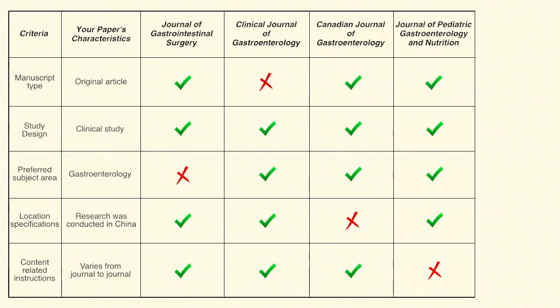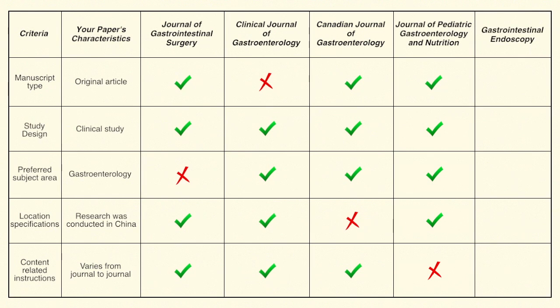Let's look at the fifth journal — Gastrointestinal Endoscopy. This journal publishes original research and clinical studies, the subject area is a match since your study used endoscopy, and there are no location specifications. The content-related instructions are also a match. So everything matches, and we have found a good journal for your paper. Your paper is a good match with Gastrointestinal Endoscopy.